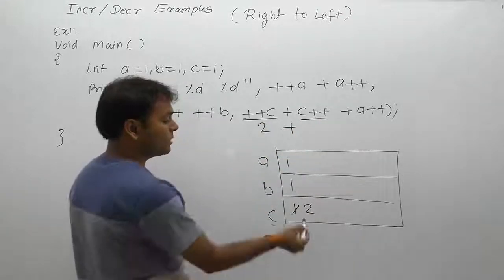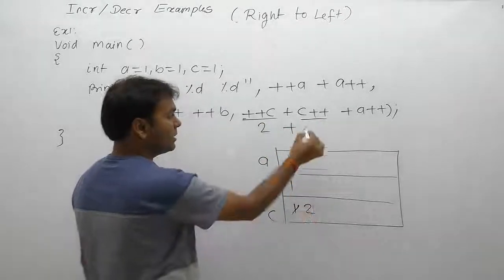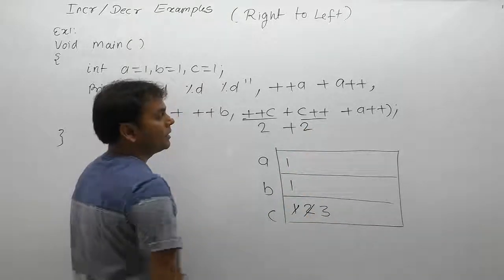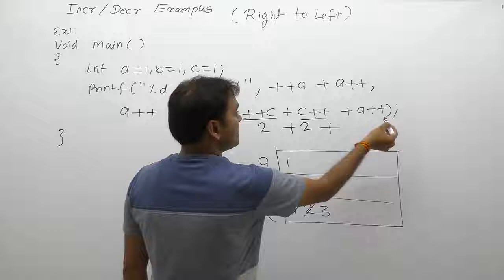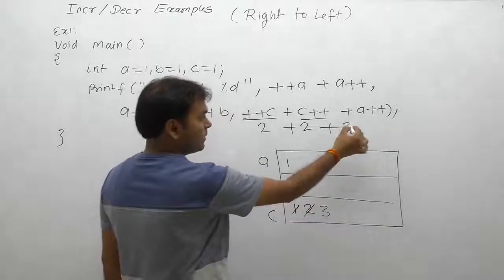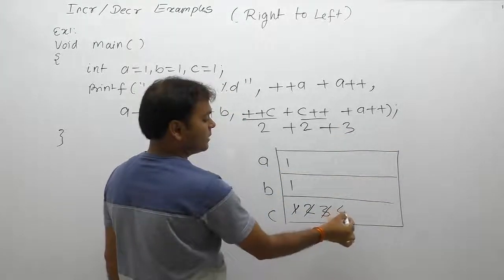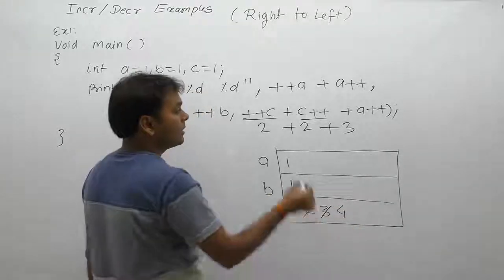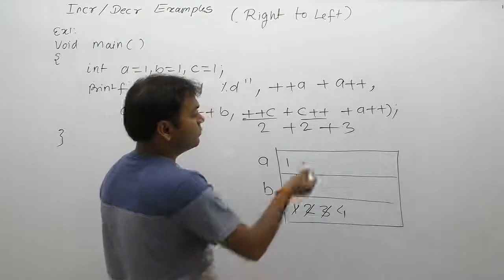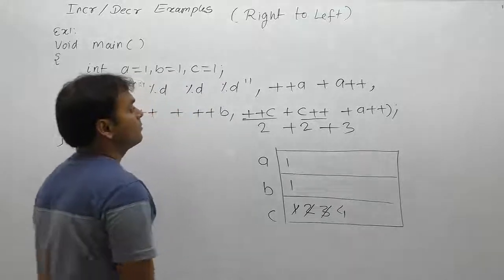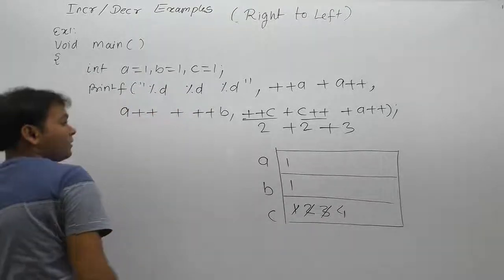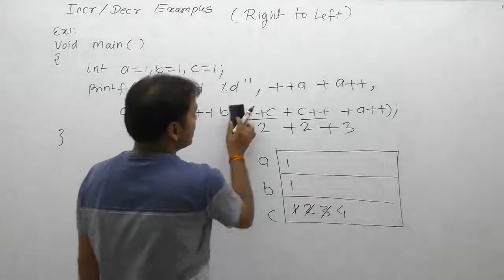The next operator is post-increment — post means first replace, then increment. Similarly, a++ is post, so again first replace, then increment. The result of this expression is 2 plus 2 plus 3, which equals 7. The final replaced value in this case is 4, and the overall result of this expression is 7.